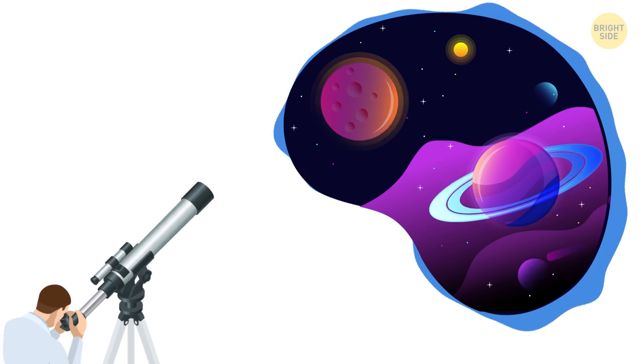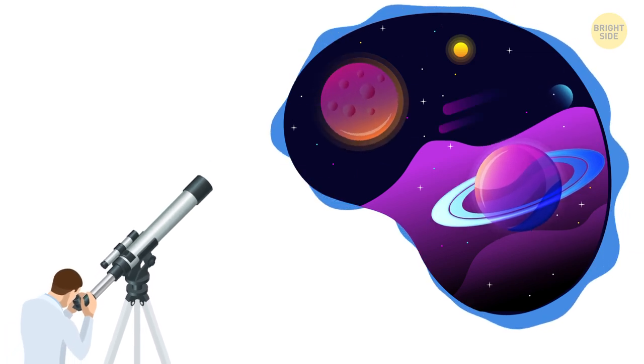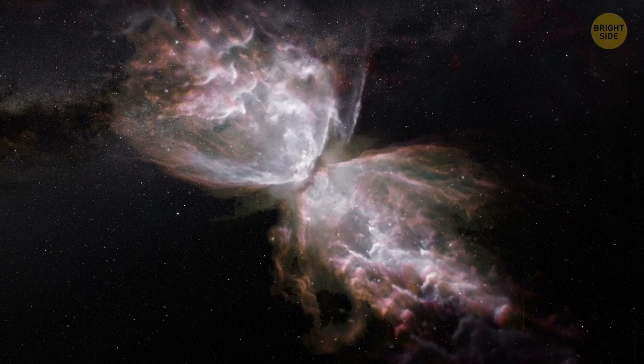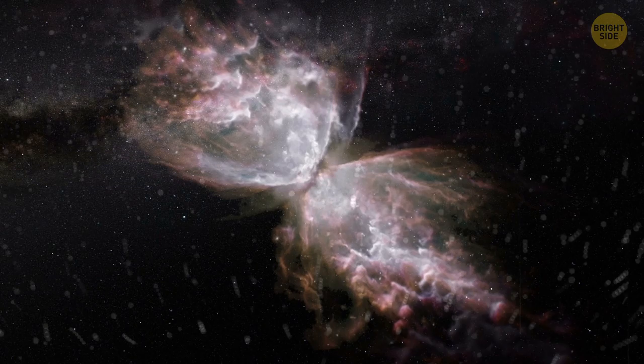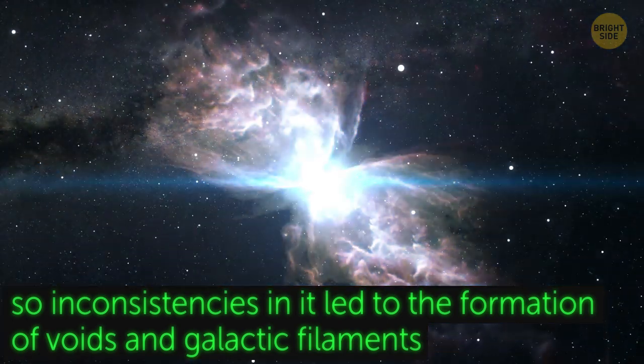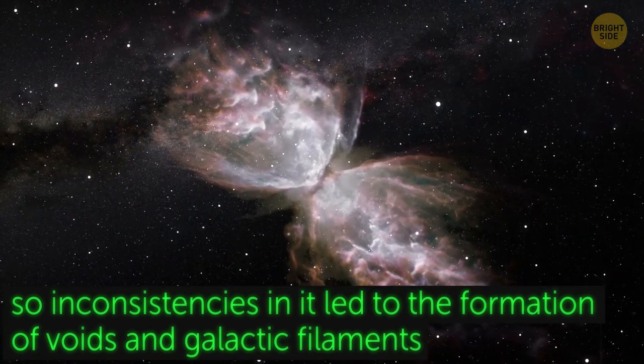This newly found galaxy found itself in a strange position because of the universal expansion after the Big Bang. You see, the presumable cause of the existence of the universe wasn't a homogeneous process, and so inconsistencies in it led to the formation of voids and galactic filaments.